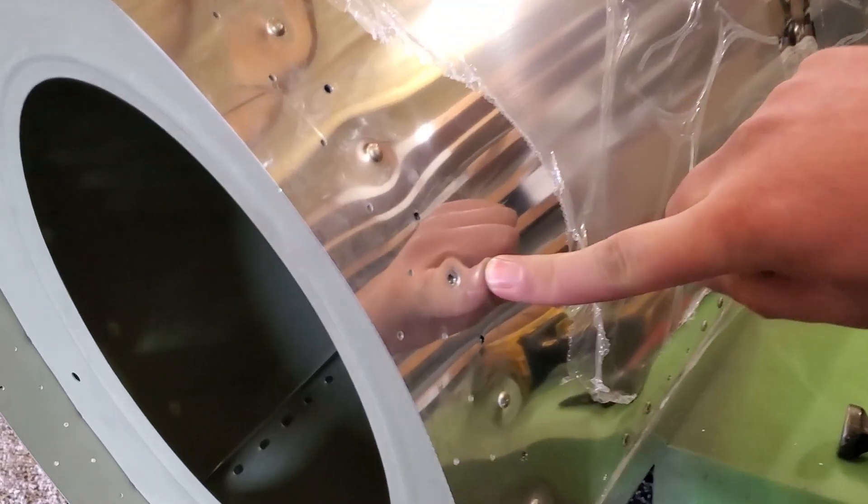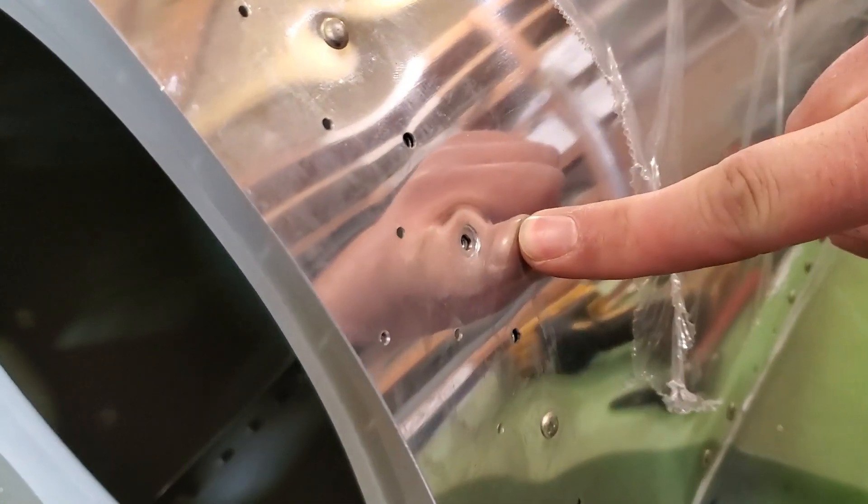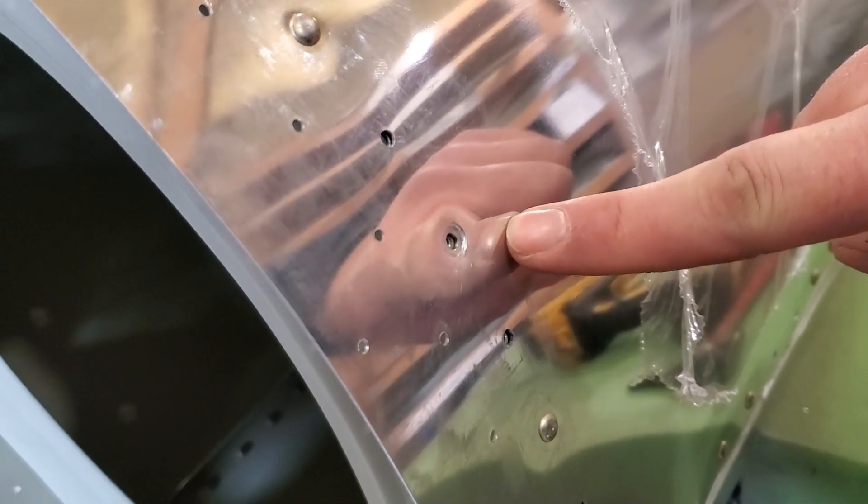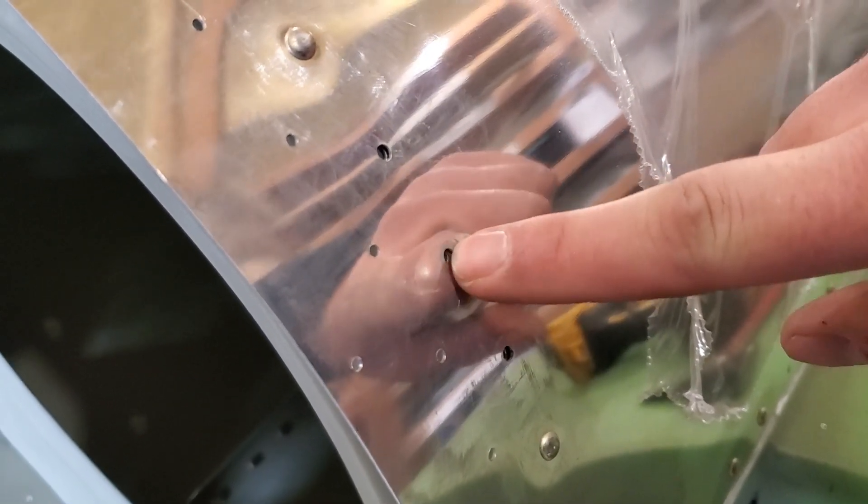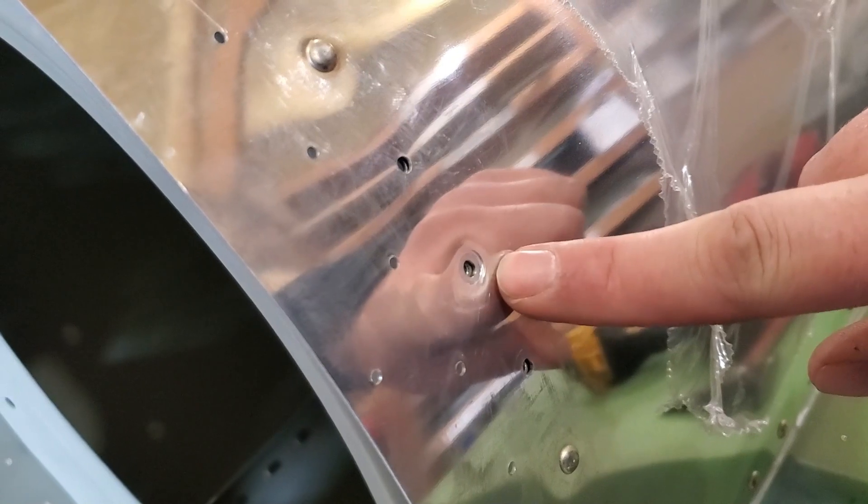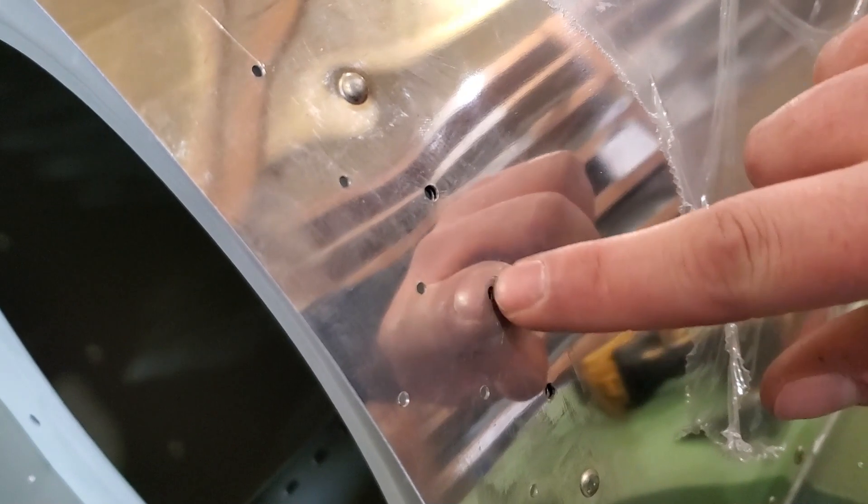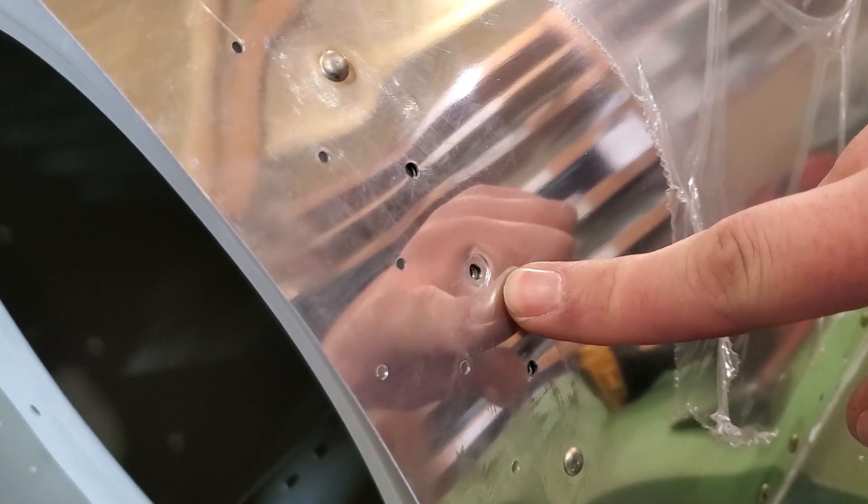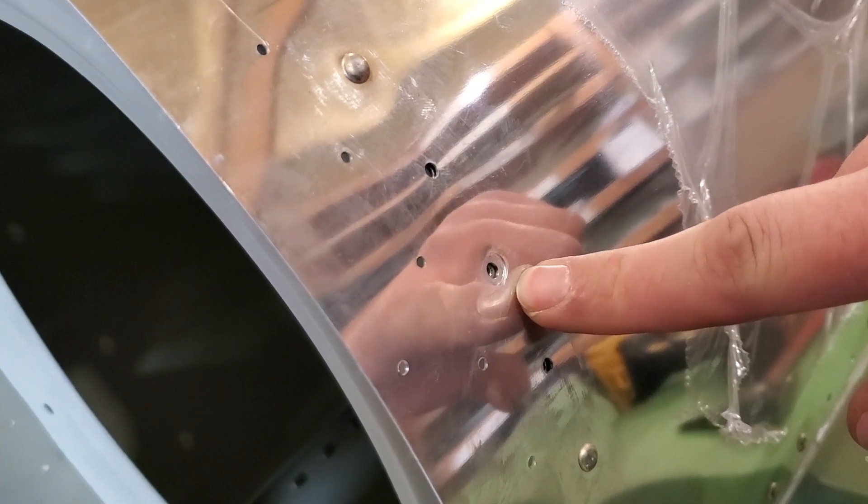We buck thousands of these rivets, and every now and then—this is our first one on this fuselage—we get a booger like that. You can see that the bucking bar slipped off the rivet, and because these aren't countersunk rivets, we do run the risk of getting a smiley in aluminum. You can also see there's a little bit of a divot there, and this is where a lot of builders might panic. Don't panic.